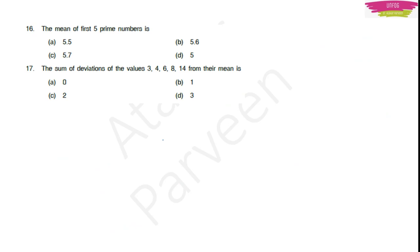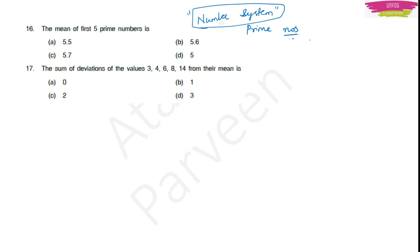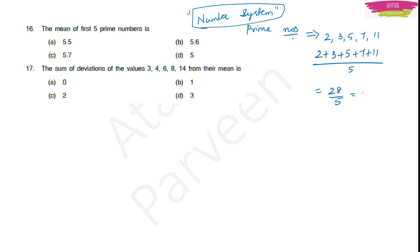Question 16: The mean of the first 5 prime numbers. Prime numbers are those which do not come in any multiplication table. The first 5 prime numbers are 2, 3, 5, 7, and 11. Mean = (2+3+5+7+11) / 5 = 28 / 5 = 5.6. Option B is the right answer.